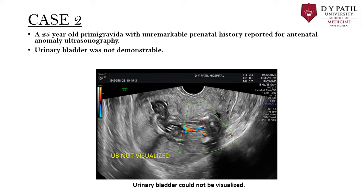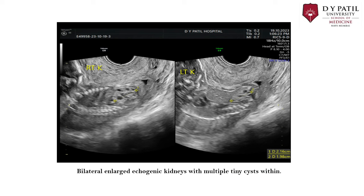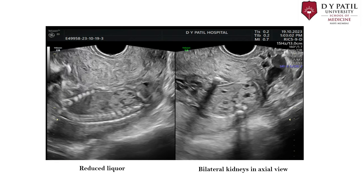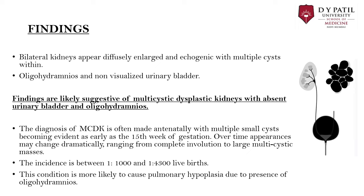In the second case, a 25-year-old primigravida with unremarkable prenatal history reported for an antenatal anomaly USG. The urinary bladder was not demonstrable. Bilateral enlarged kidneys with increased echogenicity compared to surrounding structures were seen, with multiple tiny anechoic cysts within. There is reduced liquor with hardly any amniotic fluid pocket visible. Findings are suggestive of multicystic dysplastic kidney with absent urinary bladder and oligohydramnios.